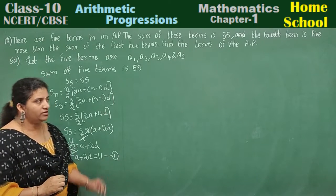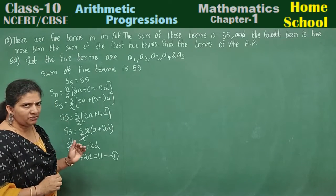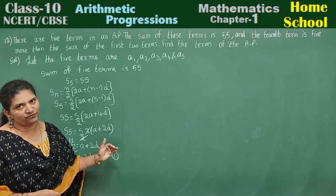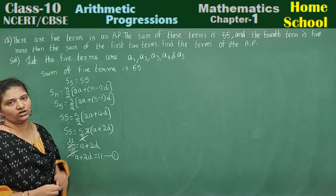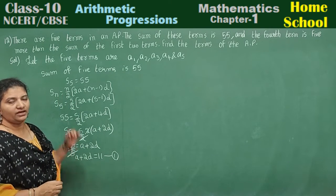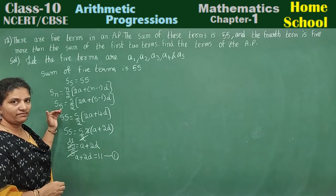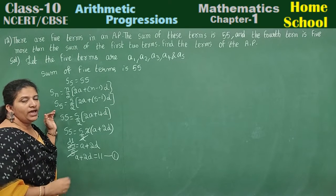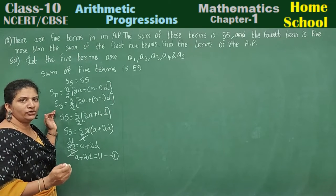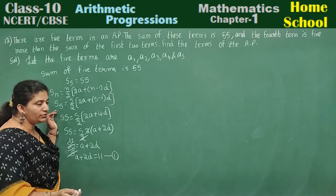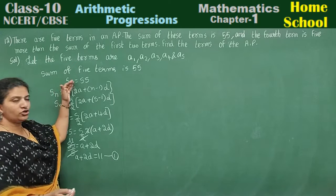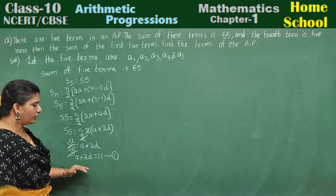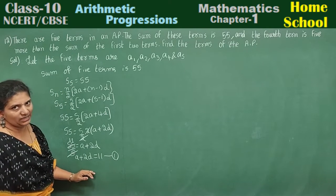To summarize: the sum of 5 terms is 55, so S5 equals 55. Applying the formula Sn equals n by 2 into 2a plus n minus 1 into d, substituting n and the S value, we get the first equation: a plus 2d equals 11.